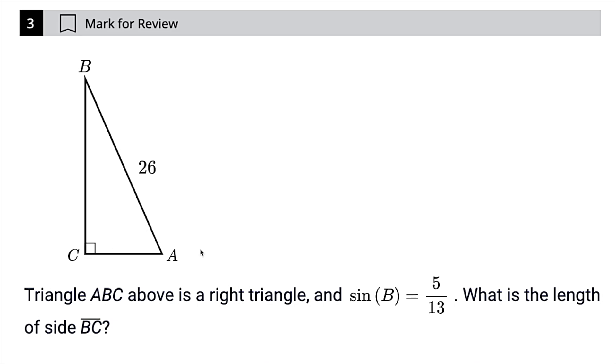So the fastest way to solve this is to first look at sine of B is 5 over 13. Just remember sine, we want to remember SOH being SOH, which means sine of something is the opposite over the hypotenuse.